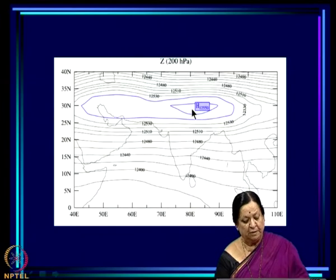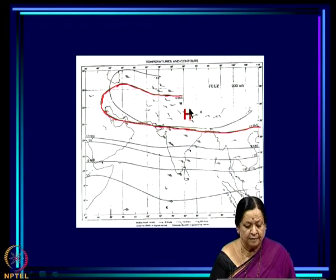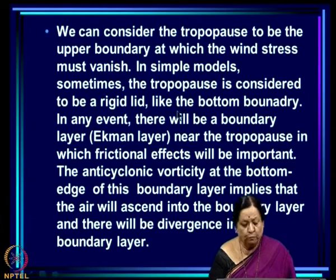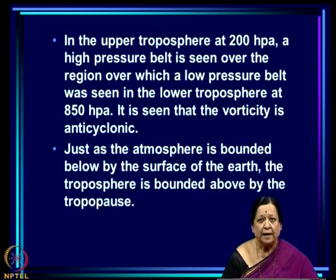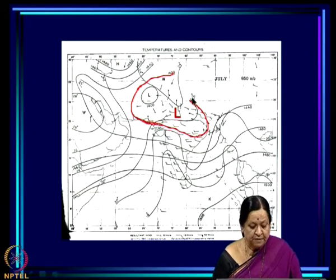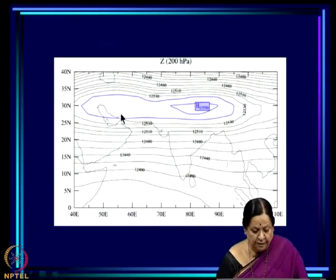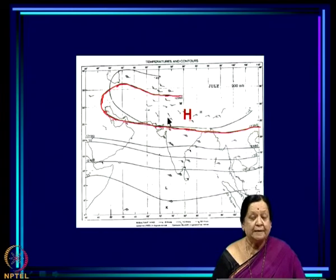This high pressure zone in the upper troposphere is built up because of the ascending air. The vorticity at 200 hPa is actually anti-cyclonic — the wind is stronger on one side, making the vorticity clockwise, which means anti-cyclonic in the Northern Hemisphere. So, at 850 hPa we had cyclonic vorticity and a low pressure belt, and at 200 hPa we have a high pressure belt over the same region, with anti-cyclonic vorticity.